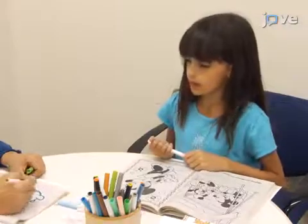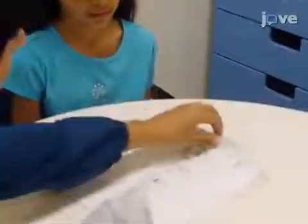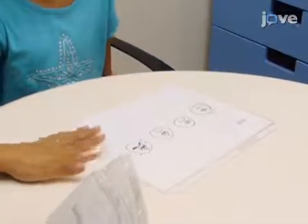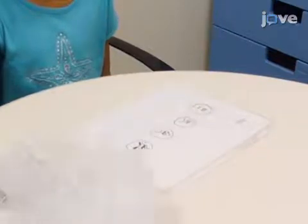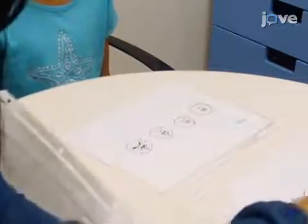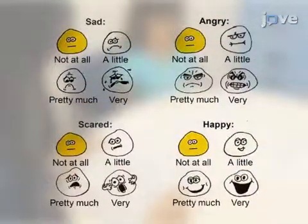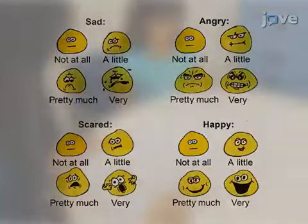Once the child is acclimated to the environment, train him or her to self-report the intensity of his or her emotional reactions — either sadness, fear, anger, or happiness — by using a simple four-point cartoon face scale to rate each discrete emotion separately. Note that each scale depicts a neutral face, followed by three faces depicting increasingly intense expressions.